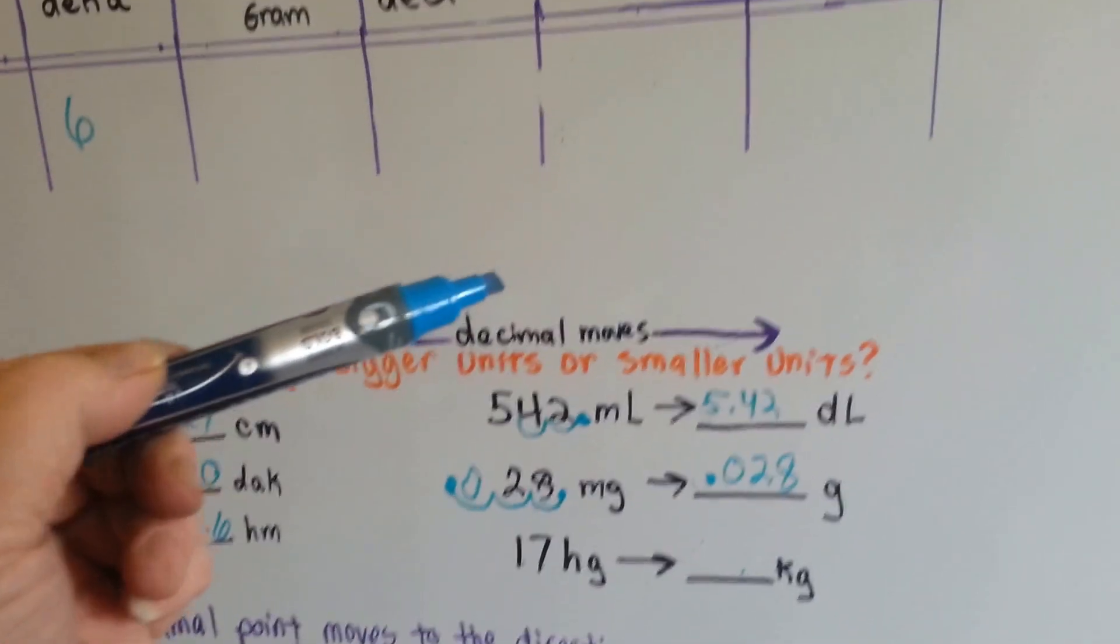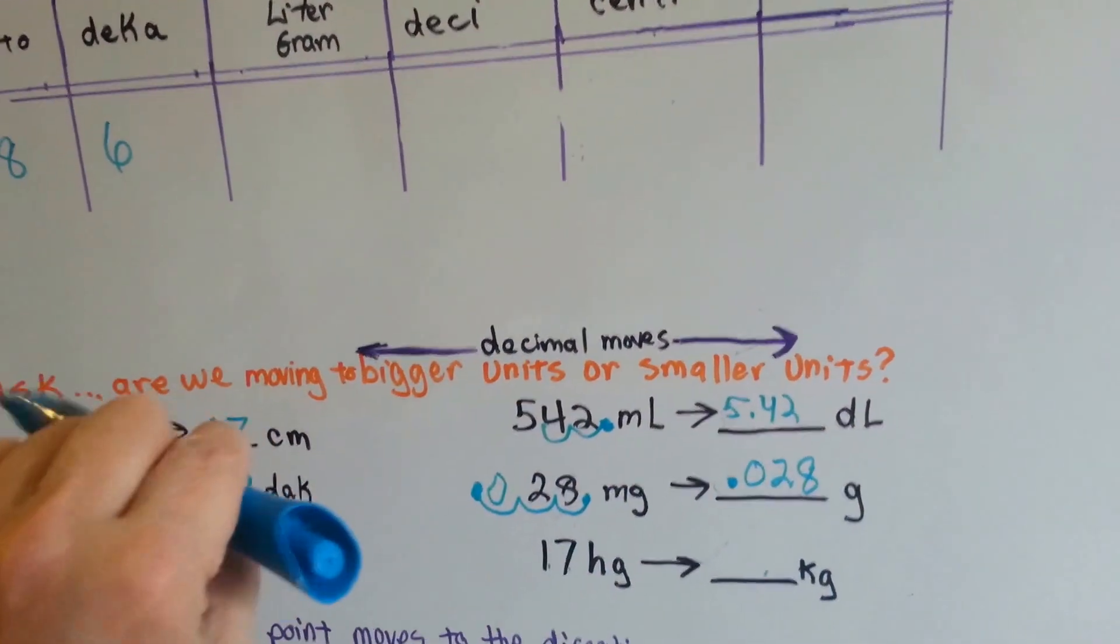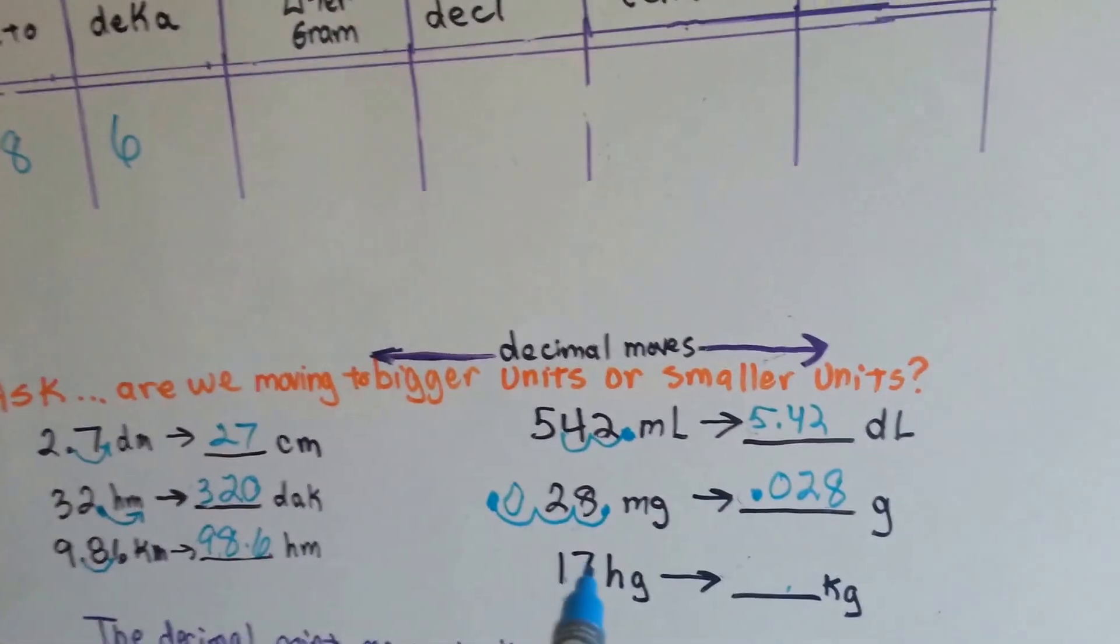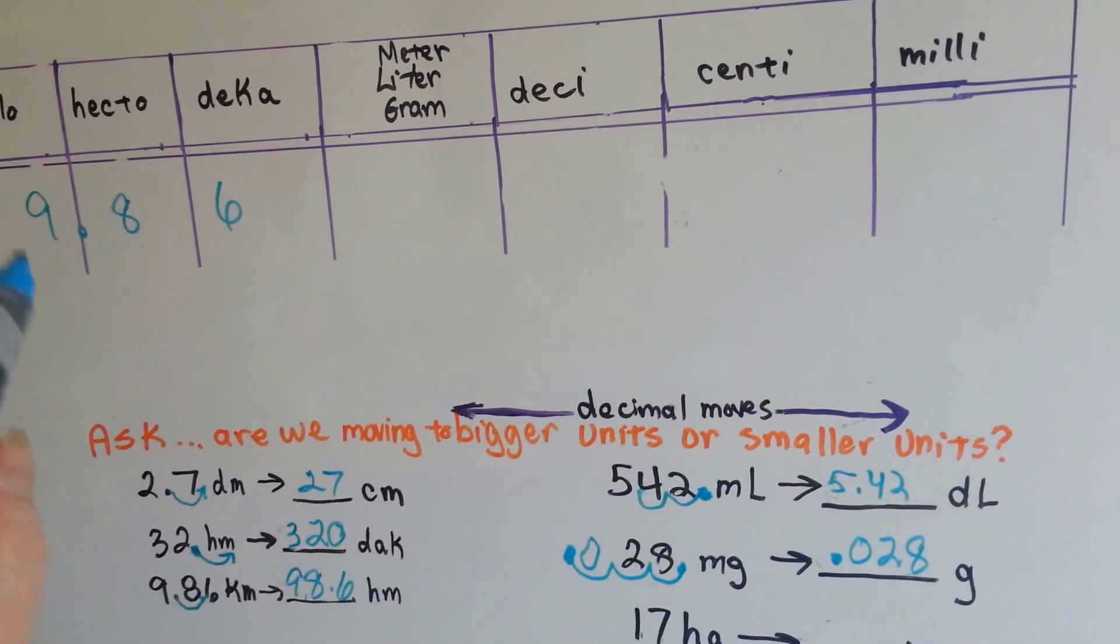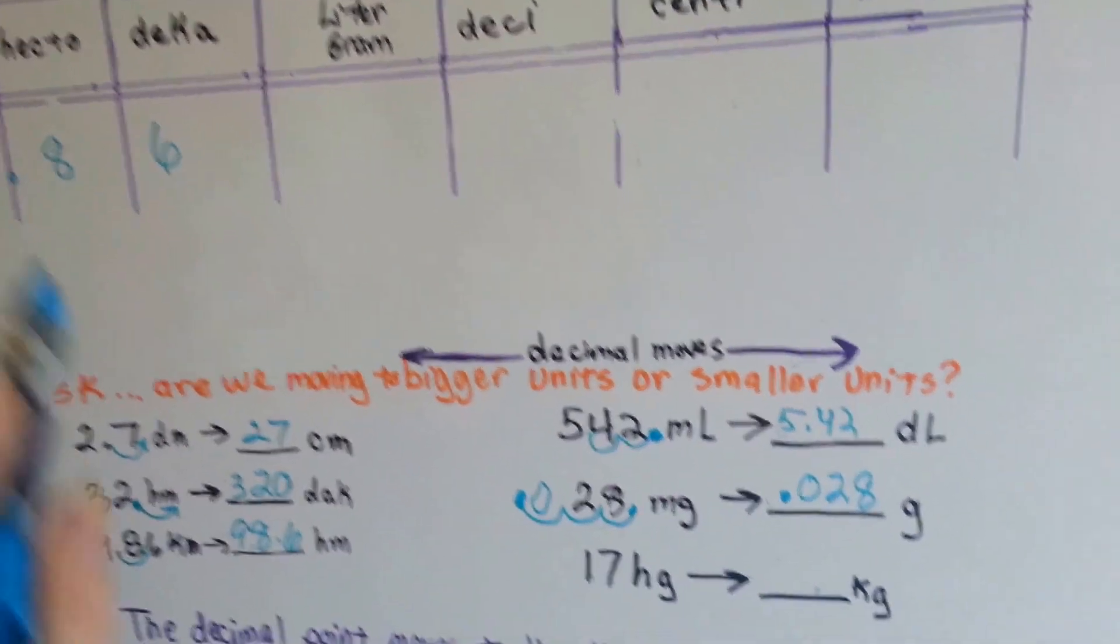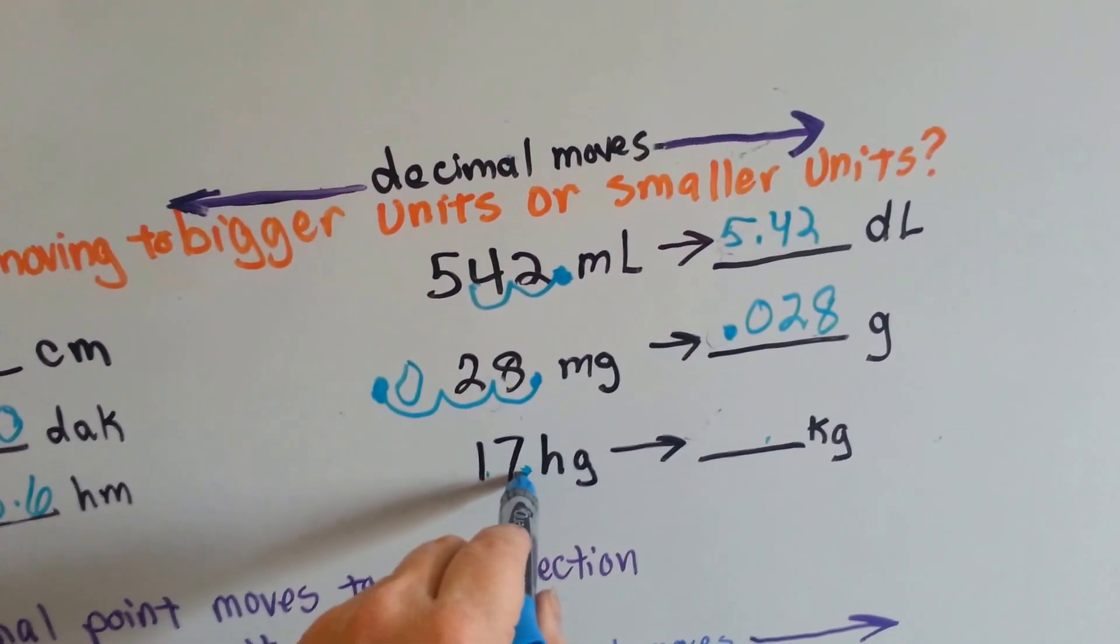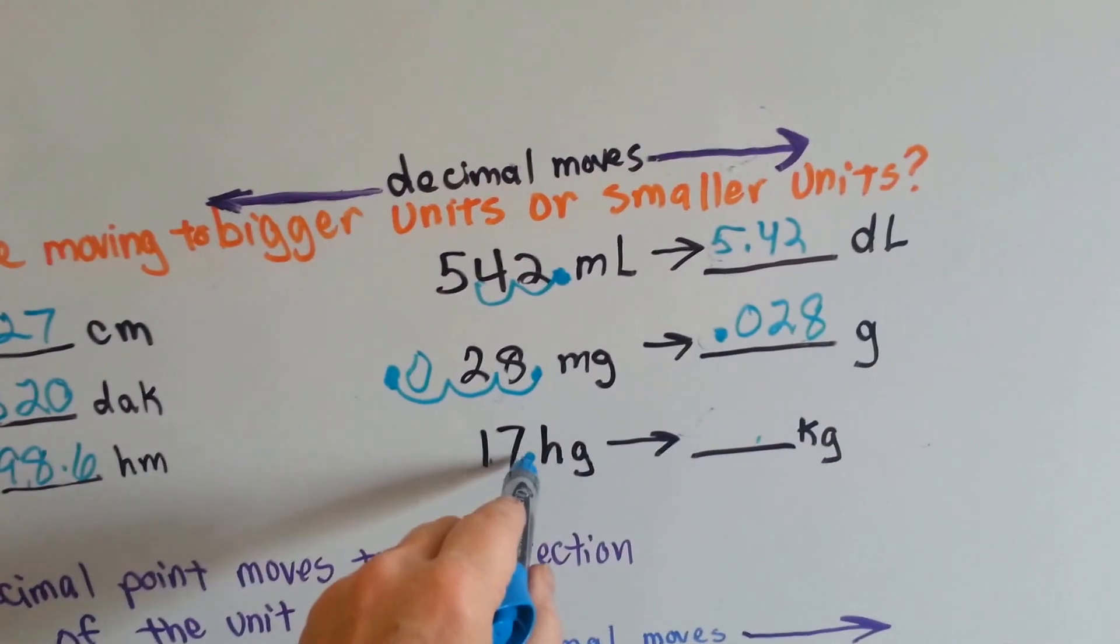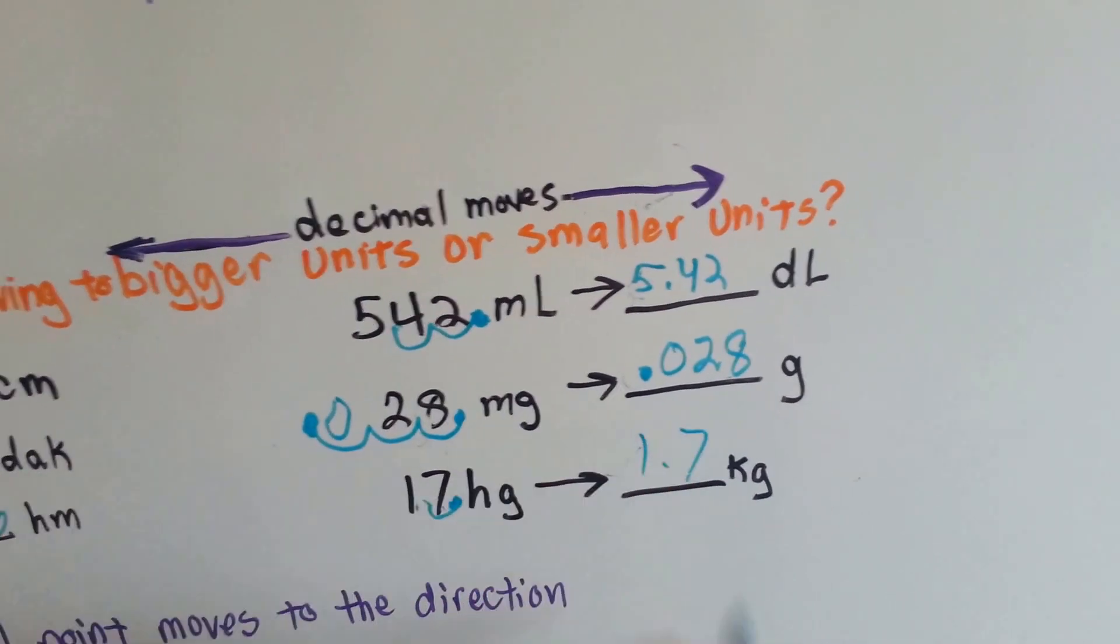If we're moving to smaller units, the decimal point goes that way. If we're moving to larger units, it goes that way, because the smaller units are on that side and the larger units are on that side. How about 17 hectograms to kilograms? 17 hectograms going to kilograms, now we're moving bigger. There's no decimal point, there's an invisible one here behind the number. We're moving to kilograms, which are bigger, so we're going to end up moving our decimal point in between here, and we get 1.7 kilograms.